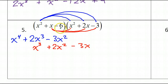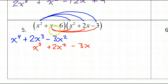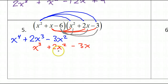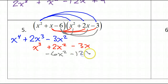Now we must distribute the negative 6 — take this negative 6 and multiply it by each term. Negative 6 times X squared is negative 6X squared. It helps to line up those like terms. Negative 6 times 2X is negative 12X. And negative 6 times negative 3 is positive 18.